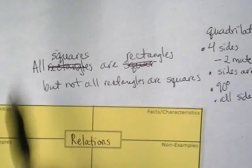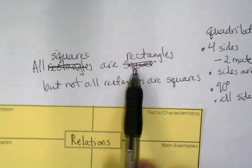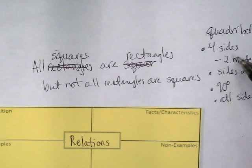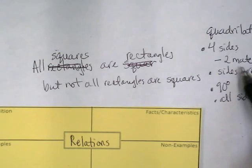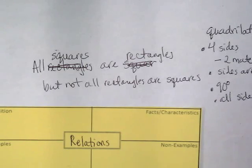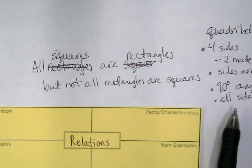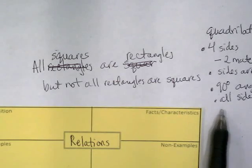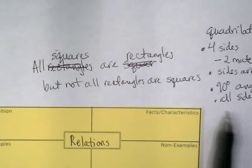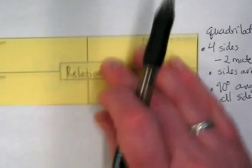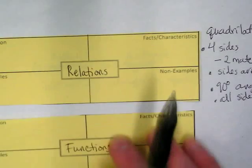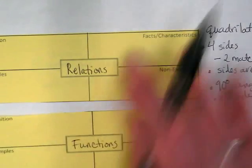All squares are rectangles because squares fit the definition of a rectangle: they have four sides, matching sets, parallel sides, and 90-degree angles. But all squares also have all the sides be the same size. The same is going to be true with relations and functions.